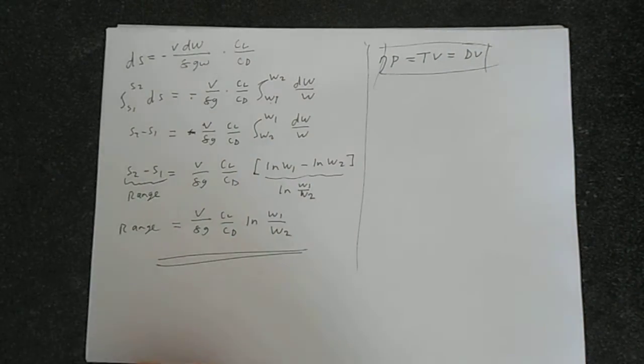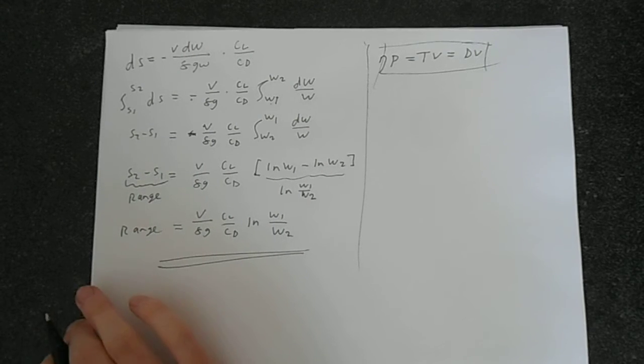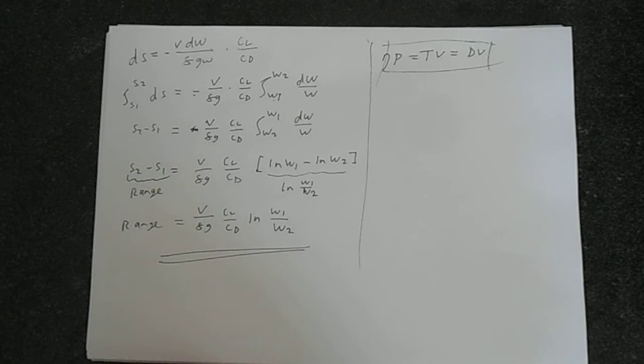Work with that assumption and follow the same sort of steps, and you'll get the expression for a propeller. Hopefully, this derivation has been helpful to you, and you now understand exactly where the Breguet range equation comes from and a little bit about why it works, which you can infer from the derivation. And finally, thank you for watching.